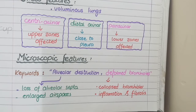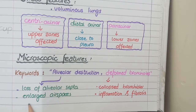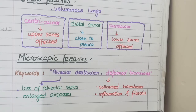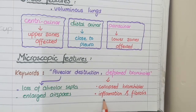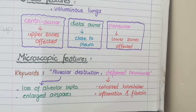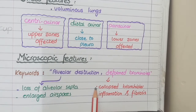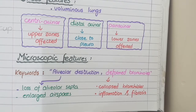Alveolar destruction is manifested on microscopy as loss of alveolar septa and resultantly enlarged air spaces. The second keyword is deformed bronchioles — in emphysema, the elastic support to small bronchioles is lost, so they become collapsed. Additionally, as emphysema is usually caused by smoking, you see inflammatory cells and fibrosis in response to smoke particles. So overall on microscopy, you see loss of alveolar septa with enlarged air spaces, collapsed bronchioles, and inflammation with fibrosis.